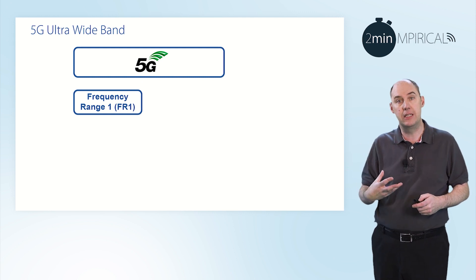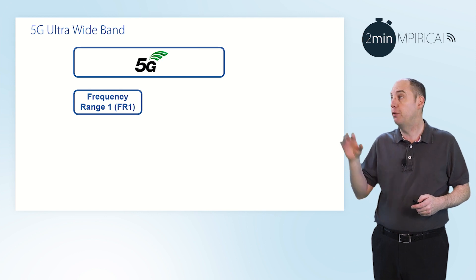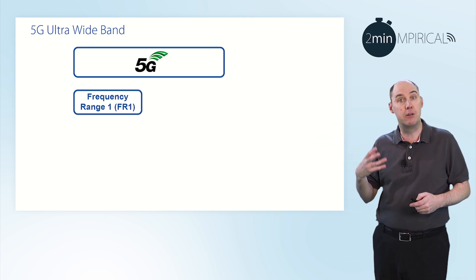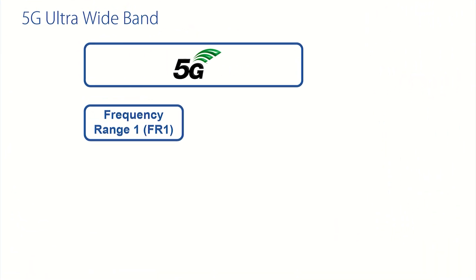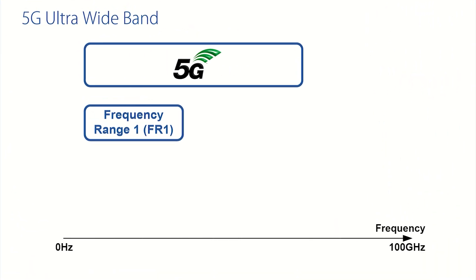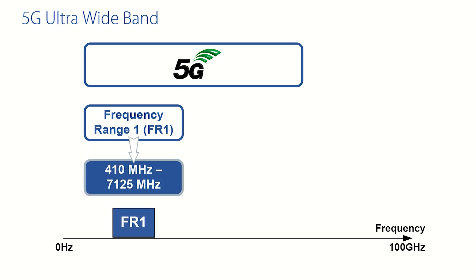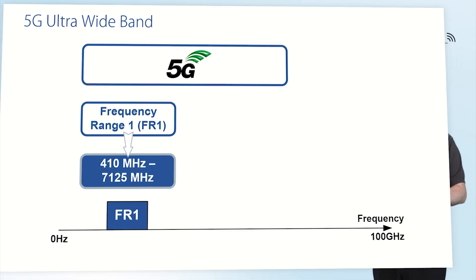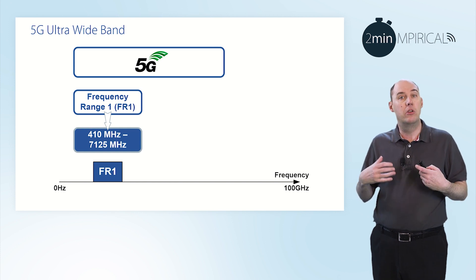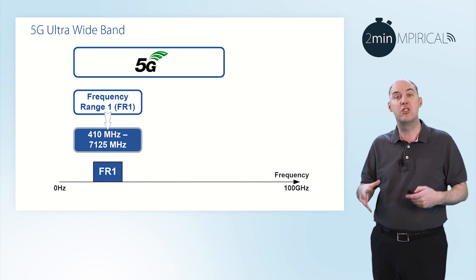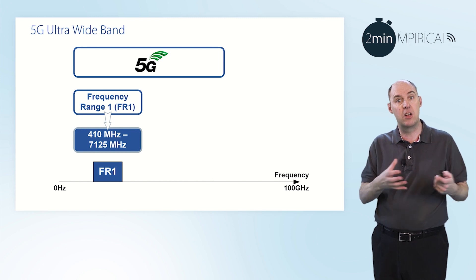When you start talking about frequencies and frequency bands in 5G, you start talking about frequency ranges, and we have frequency range one and frequency range two. Frequency range one runs between around 400 megahertz up to over 7 gigahertz, and this is where you'll typically find existing 2G, 3G, and 4G deployments, as well as some 5G deployments. Sometimes we refer to this frequency range as low band and mid band.